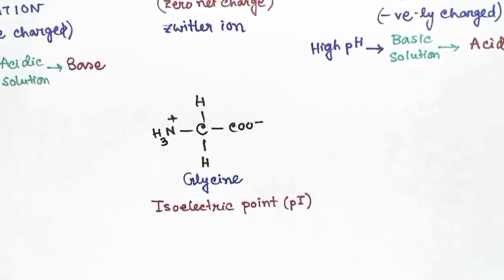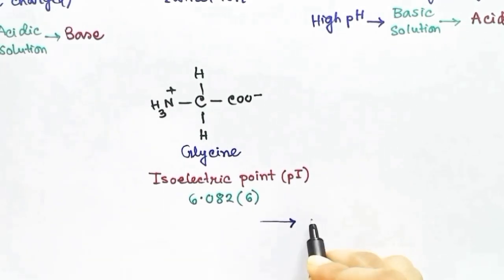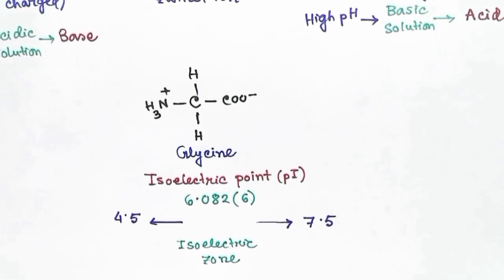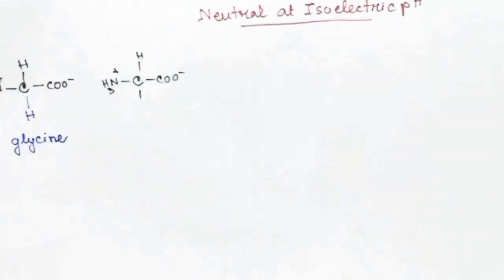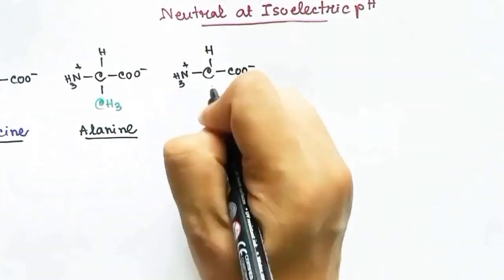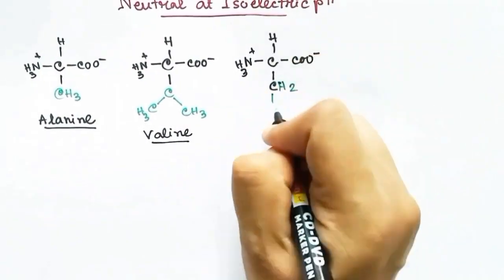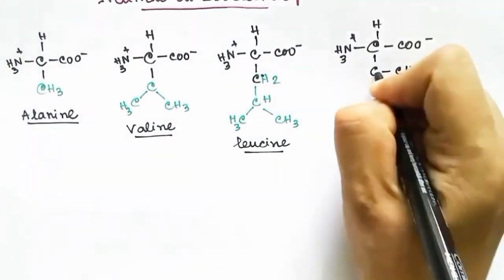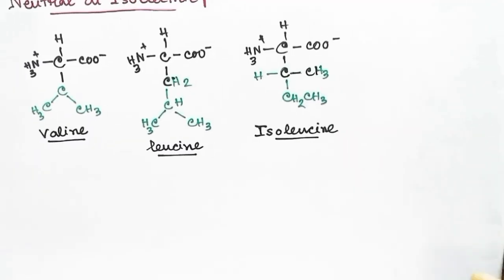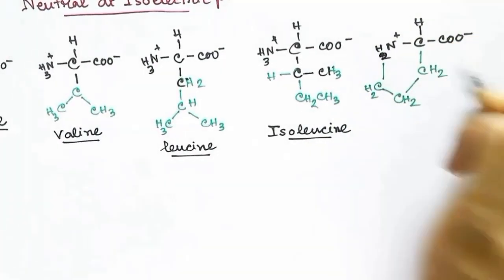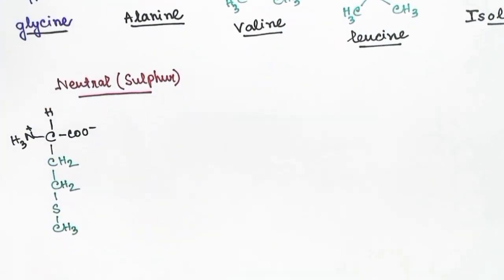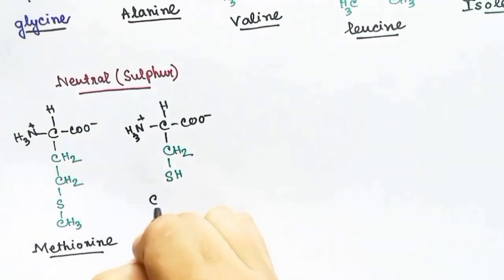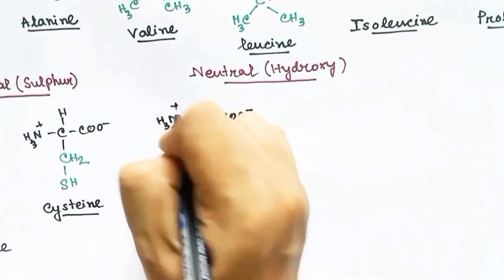As an example, the isoelectric point of glycine is 6.082, so at pH 6 glycine will have a net charge of zero — it is the zwitter ion. There are overall 20 amino acids which build up the structures of our body, made by altering the R group. Neutral amino acids are neutral at their isoelectric point and have no charged functional group in their R group; examples include glycine, alanine, valine, leucine, isoleucine, and proline. Some neutral amino acids have a sulfur group — examples are methionine and cysteine.